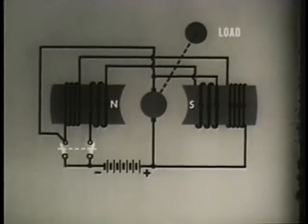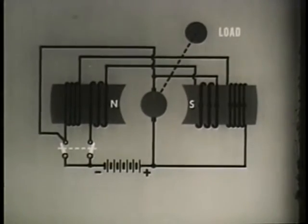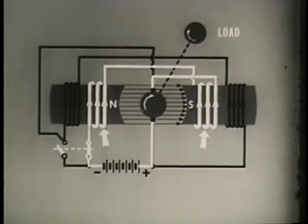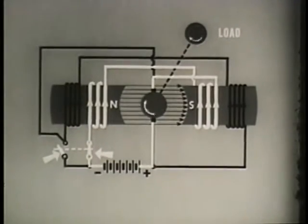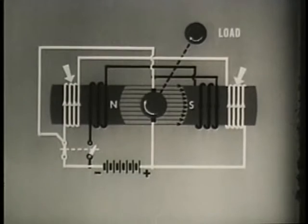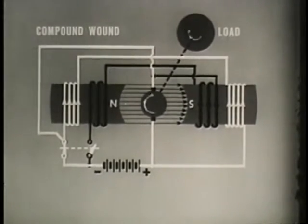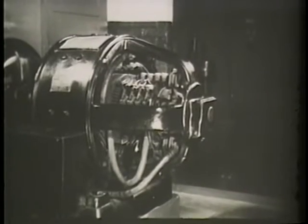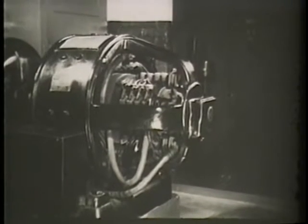The desirable characteristics of both the series and shunt wound motors can be achieved in the compound wound motor. In order to obtain good starting torque, the series field is used. When running speed has been attained, a centrifugal switch cuts out the series field and cuts in the shunt field — it is now a shunt motor and the speed regulation is good. Compounding provides good starting torque and good speed regulation, allowing for efficient operation and minimizing the possibility of damage to the motor.